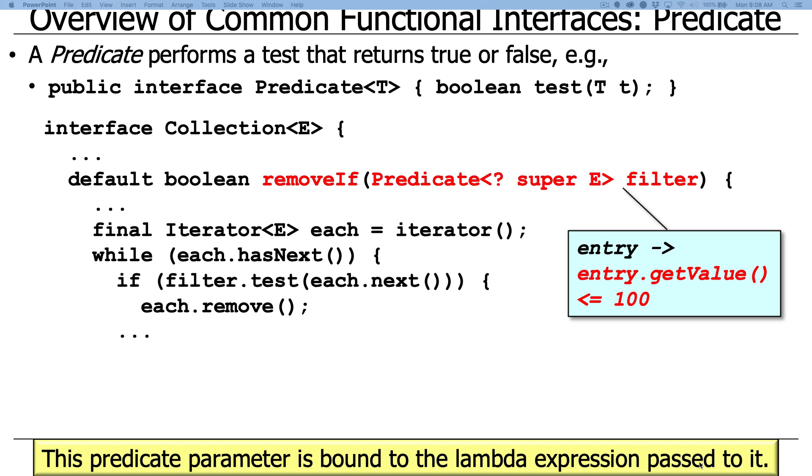Here's what this predicate is bound to in the example that we're looking at. So, entry arrow, entry dot get value less than 100. That's the value that's going to be bound as this parameter. So this funny lambda expression is actually going to turn into predicate question mark super E filter when we look at the implementation of the code. So remember we talked about binding. That's what gets bound to it.